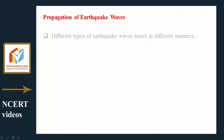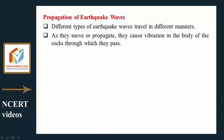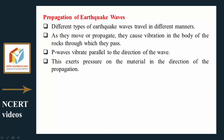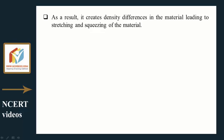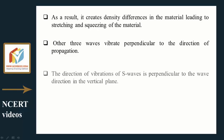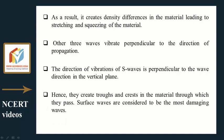Different types of earthquake waves travel in different manners. As they propagate, they cause vibration in the body of the rocks through which they pass. P waves vibrate parallel to the direction of the wave, exerting pressure on the material in the direction of propagation, creating density differences leading to stretching and squeezing of the material. S waves vibrate perpendicular to the direction of propagation — their vibration is perpendicular to the wave direction in the vertical plane, creating troughs and crests in the material.